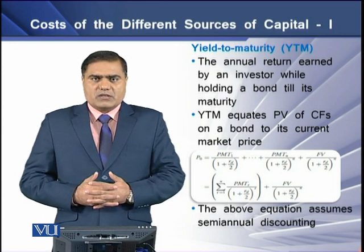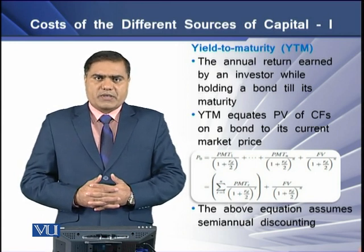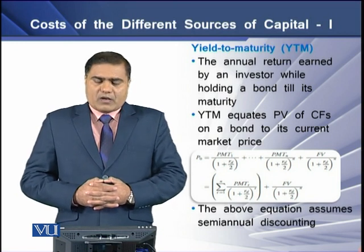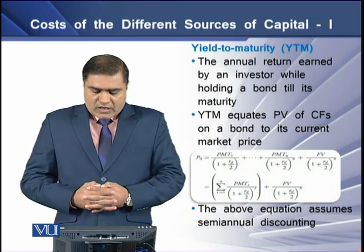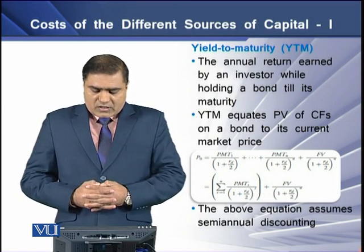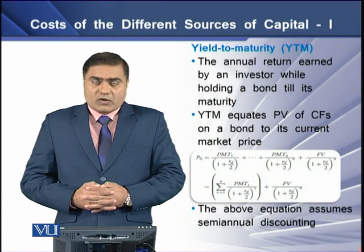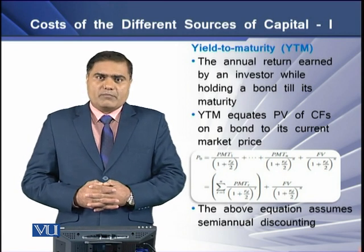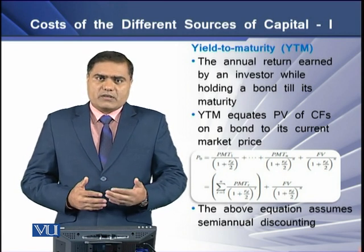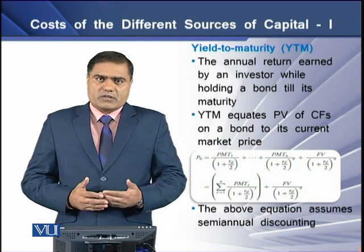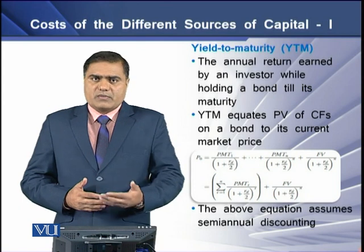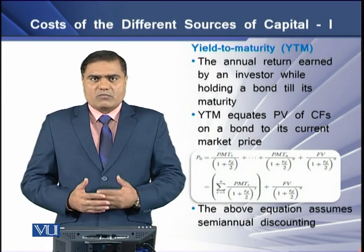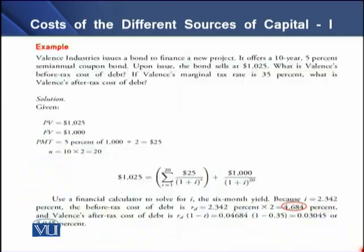The rate at which these two values equal the current price of the bond is known as yield to maturity or YTM. In this equation we are using semi-annual compounding. This compounding may be monthly, quarterly, or annually, so we have to amend our model accordingly.